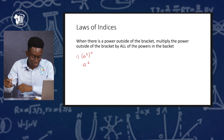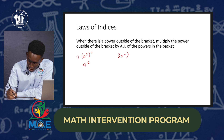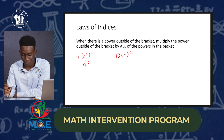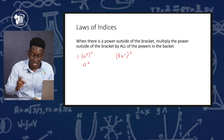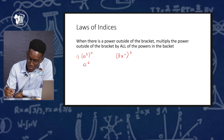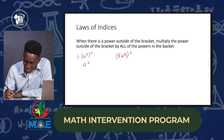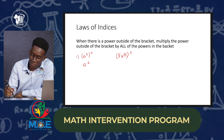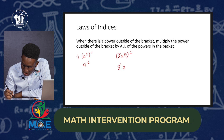Let's look at another example: 3x to the fourth all raised to the second power. The law says the power outside the bracket is multiplied by all the powers in the bracket — not just one, all of them. So this 2 has to multiply all the powers. The 3 is being raised to the first power and x is raised to the fourth, so 2 multiplies both: 3 to the 1 times 2 gives 3², and x to the 4 times 2 gives x⁸.